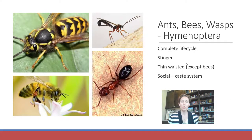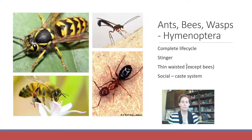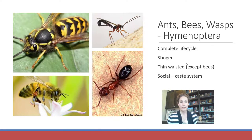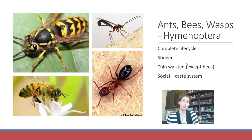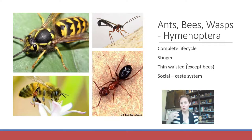Ants, bees, and wasps are in the order Hymenoptera. All of these insects have a pinched waist, making it easy to distinguish the head, thorax, and abdomen — though honeybees have a slightly thicker waist. They have a complete life cycle. This order has the ability to have a stinger, which is usually a modified ovipositor — an egg depositor. In social insects like fire ants, honeybees, or yellow jackets, workers can't lay eggs but can sting, while the queen lays eggs but doesn't sting. They often have a caste system, ranging from truly eusocial to completely solitary.